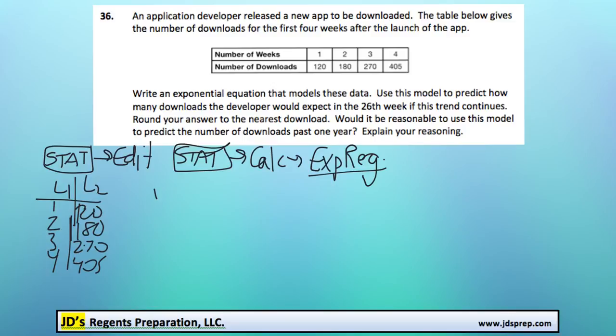Now once you've got that preclicked, you should find out that in the form of an equation y equals a times b to the power of x, we should get an a value of 80 and a b value of 1.5.